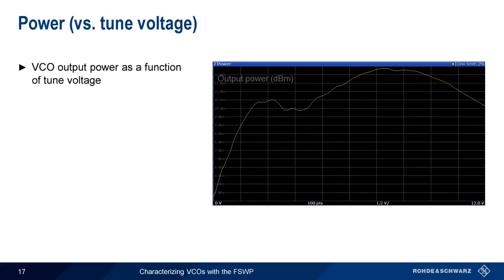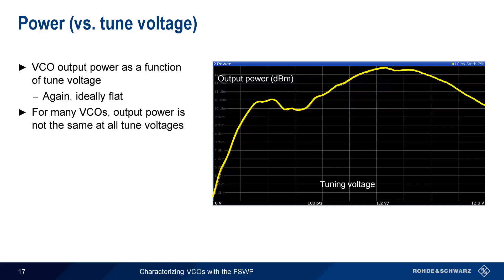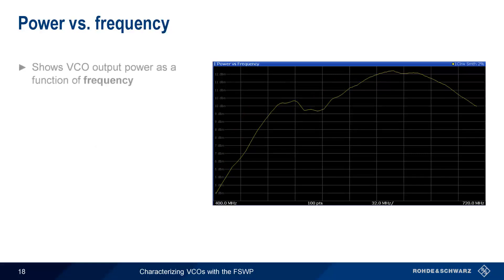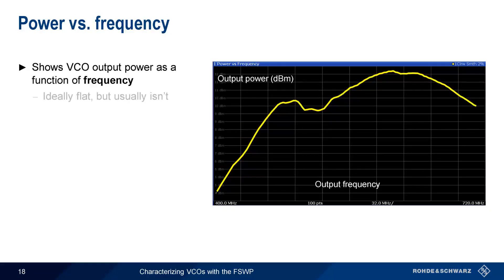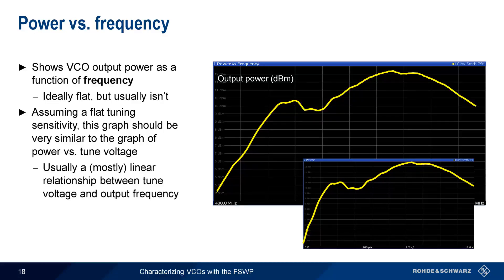The power measurement shows VCO output power as a function of the tuned voltage. In the ideal case this graph would also be flat — that is, output power would be constant regardless of the tuned voltage. That said, in most VCOs output power does vary with tuned voltage. This is an important measurement, since the output of a VCO is often connected to a device such as a mixer that requires input power to be within a certain range for good performance. We can also plot VCO output power as a function of frequency. Again, ideally this would be flat, but usually isn't. Assuming a flat tuning sensitivity, this graph should be very similar to the power versus tuned voltage graph, because there is often a fairly linear relationship between tuned voltage and output frequency.